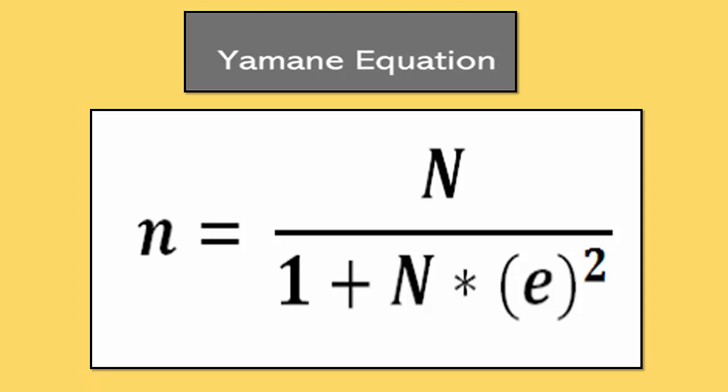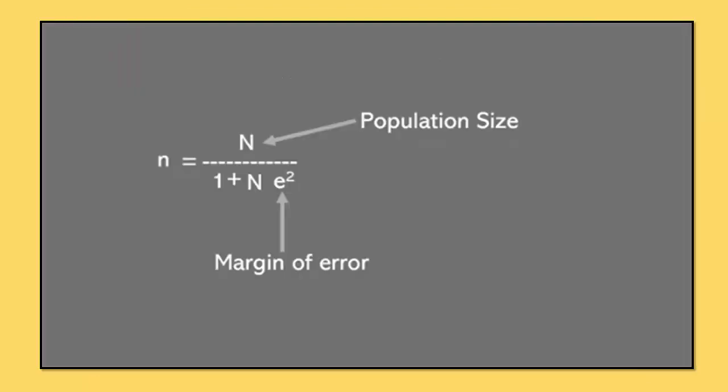The Yamane formula or Yamane equation is n equals N divided by 1 plus N times e bracket square. Capital N is equal to your population size and e square means e is equal to margin of error.